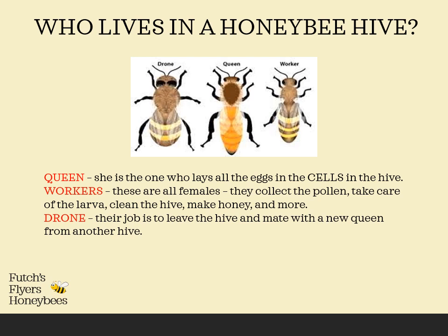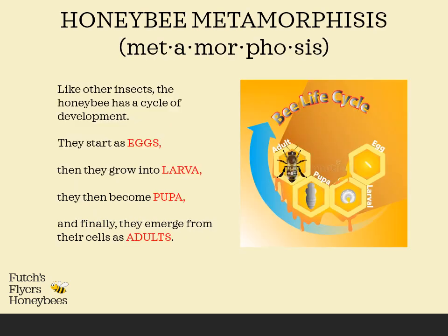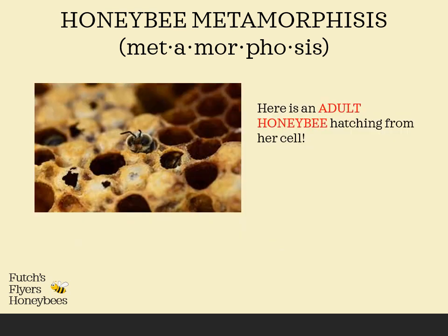The drone, which you see on the left — their job is to leave the hive and mate with a new queen from another hive, and that's how they survive. Honeybees go through a metamorphosis: they start as eggs, they grow into larvae, then they become pupa, and finally adults. In this picture we can see an adult honeybee hatching from her cell.